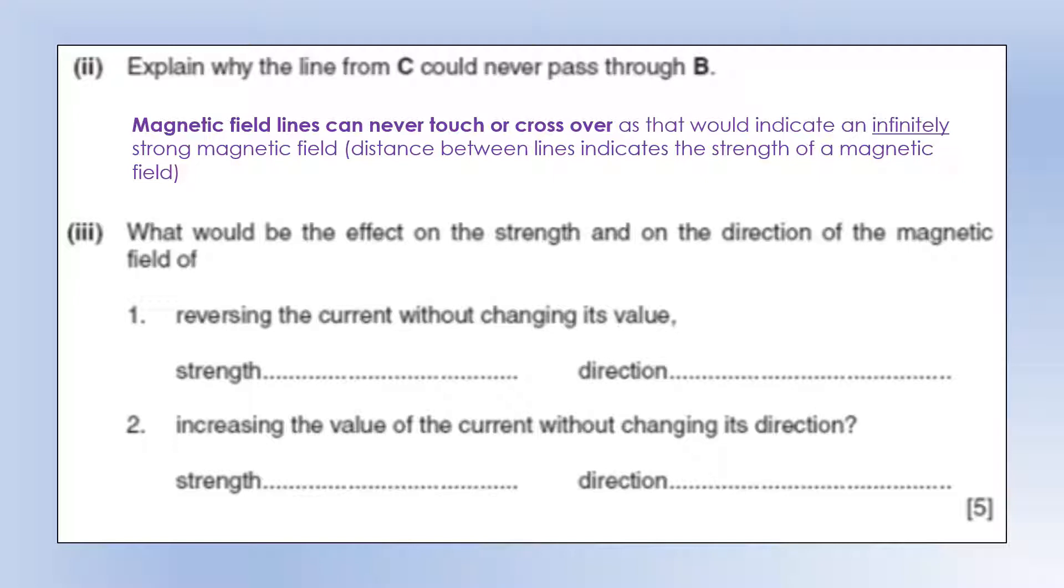What would be the effect on the strength and on the direction of the magnetic field of reversing the current without changing its value? So if you don't change the value or the magnitude of the current, you're not going to have any effect on the strength. But it will change the direction of the field. It will be completely opposite. If you increase the value without changing its direction, we get the opposite. So the field strength would increase if you can make a bigger current, but its direction not affected at all.